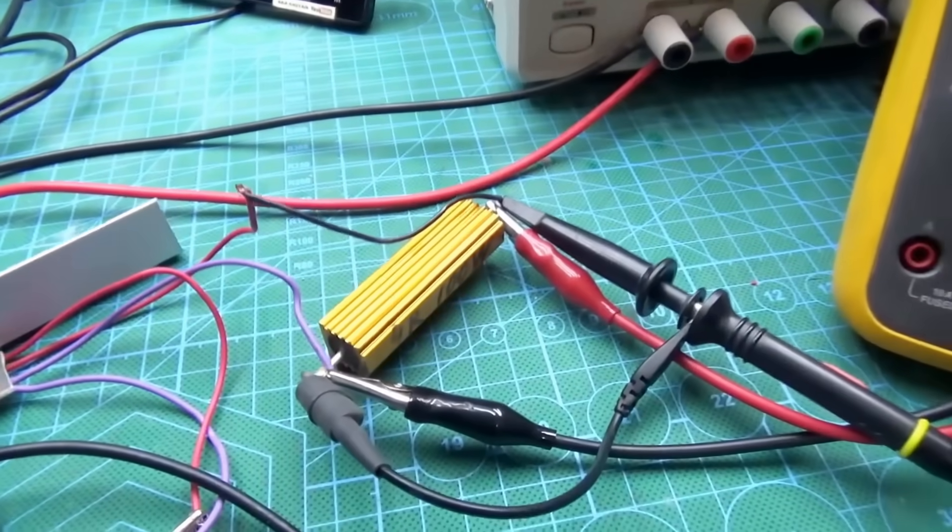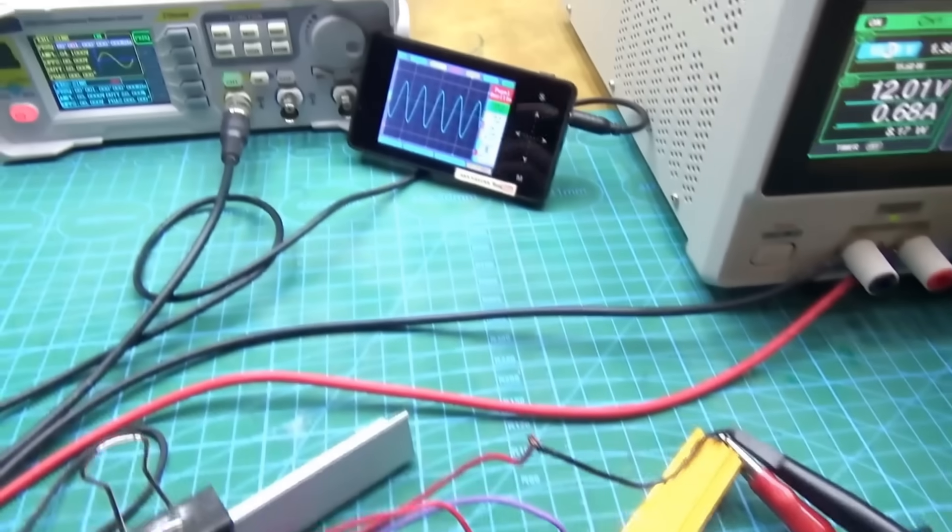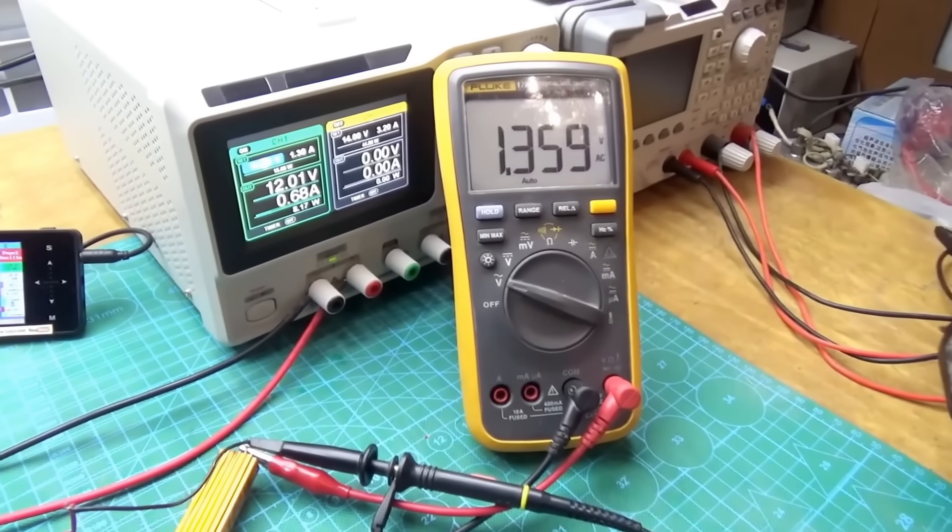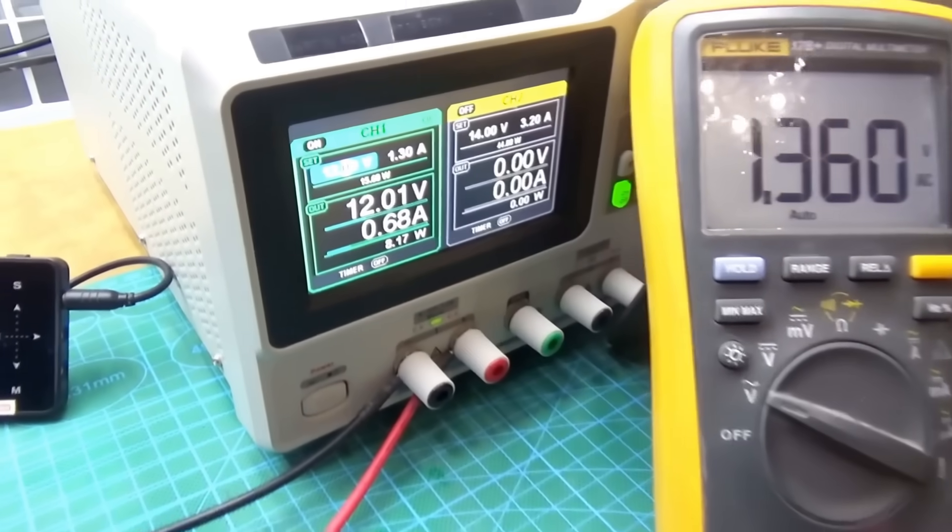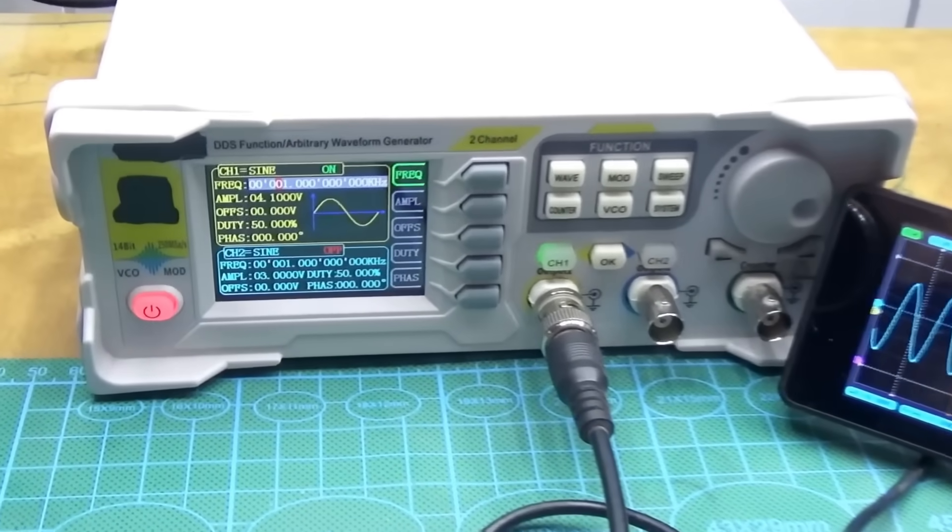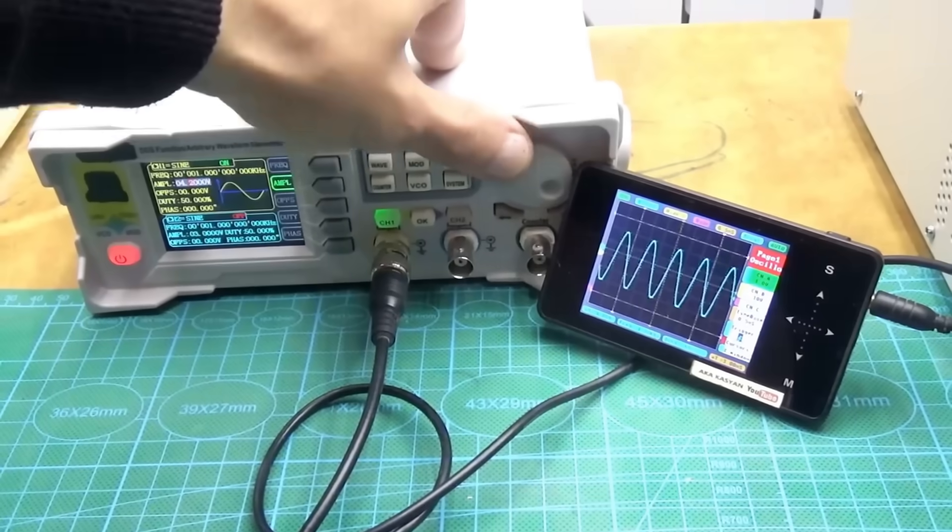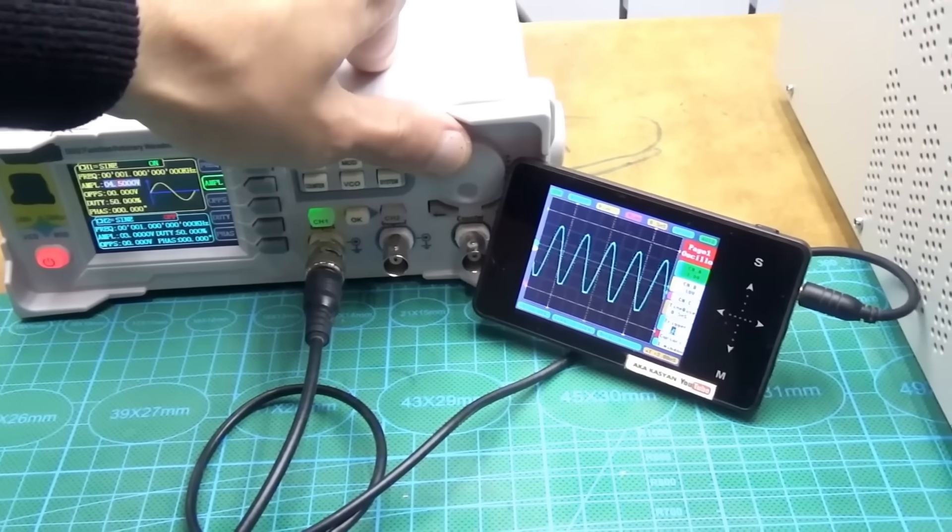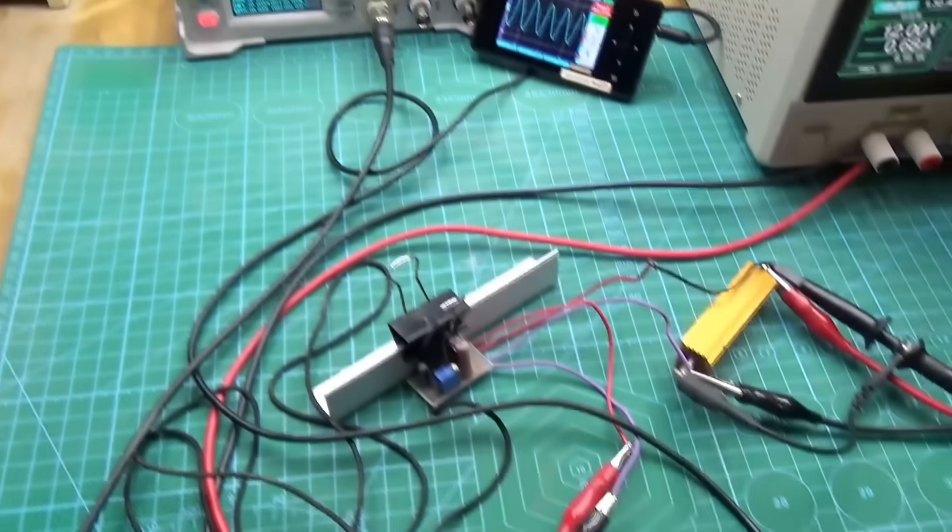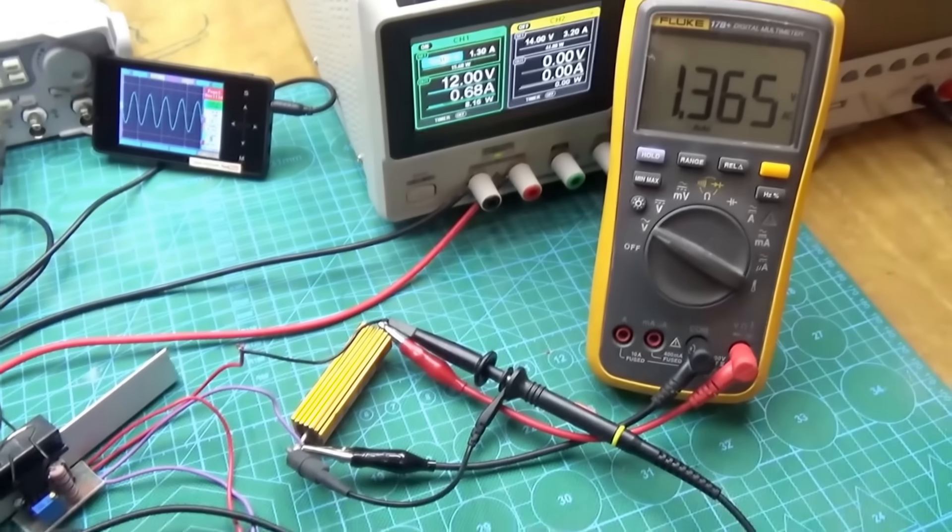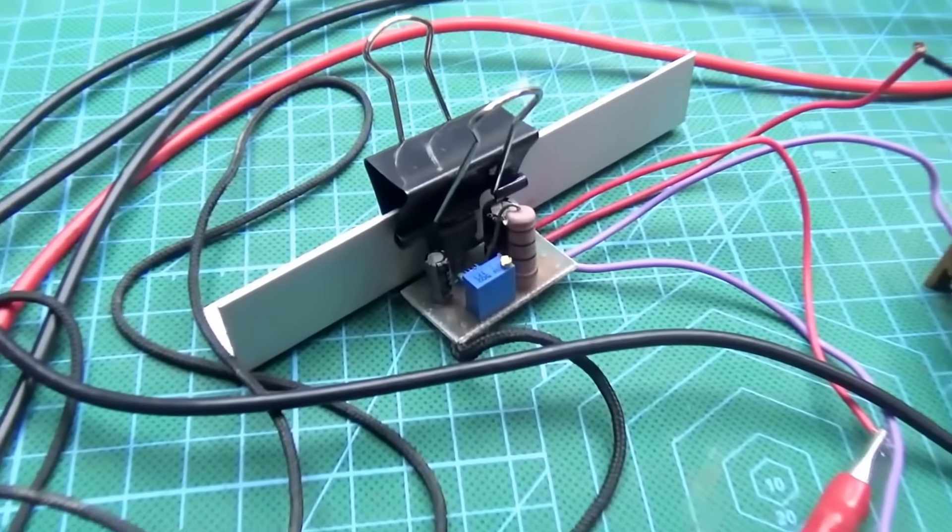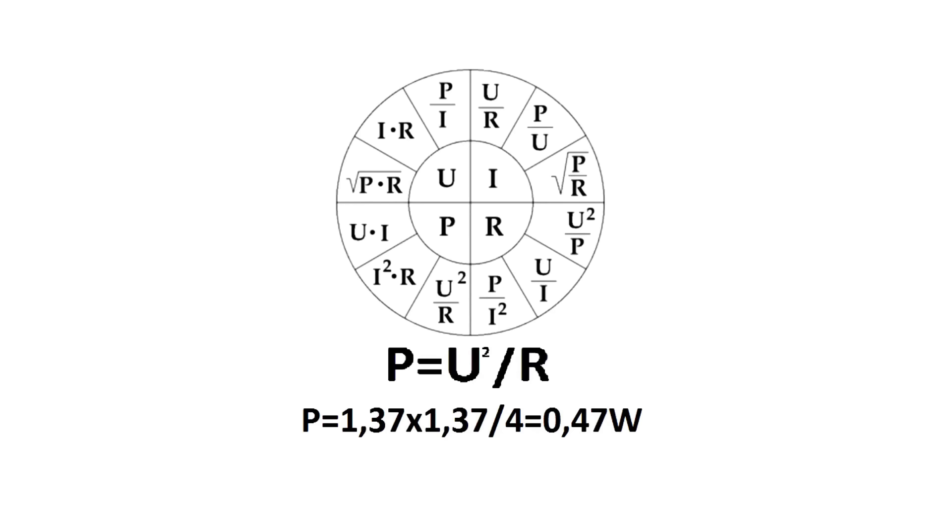I even took the time and did measurement of the amplifier's output power. Measurement conditions: A 4 ohm load in the form of a resistor is connected to the amplifier's output. In parallel with it, a multimeter in AC voltage measurement mode and an oscilloscope. Amplifier power supply, 12 volts. A 1 kHz sine wave from a signal generator is fed to the input. Increase the amplitude until clipping occurs and record the maximum voltage on the multimeter. I got about 3.8 volts. Then, a simple formula calculation shows that the maximum power on a 4 ohm load was about 3.6 watts.